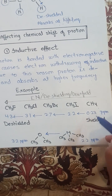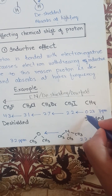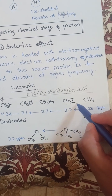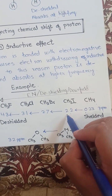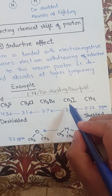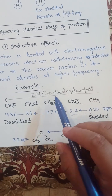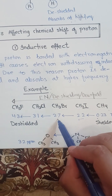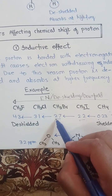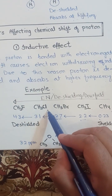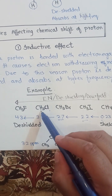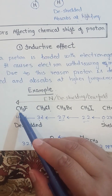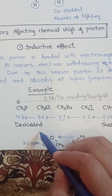CH4 methane gives the NMR peak at 0.23 ppm. When this methyl group is attached with iodine, it becomes methyl iodide, and it will be shifted towards the downfield with the peak at 2.2 ppm. When the more electronegative atom bromine is attached, it will be more shifted downfield and the signal will be at 2.7 ppm. When attached with chlorine, which is more electronegative than bromine, the proton NMR signal will be shifted more towards downfield at 3.1 ppm. When attached with fluorine, it will become 4.3 ppm — that is, more deshielded.